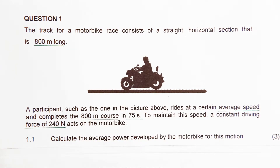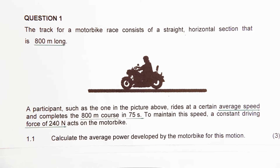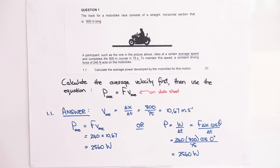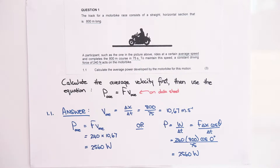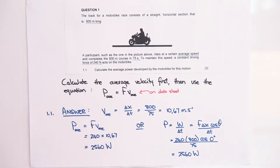Question 1.1: calculate the average power delivered by the motorbike for this motion. To calculate the average power, we have two equations we can use: average power equals force times average velocity, or power equals the rate at which work is done. I have done both — let's look at power equals force times average velocity first.